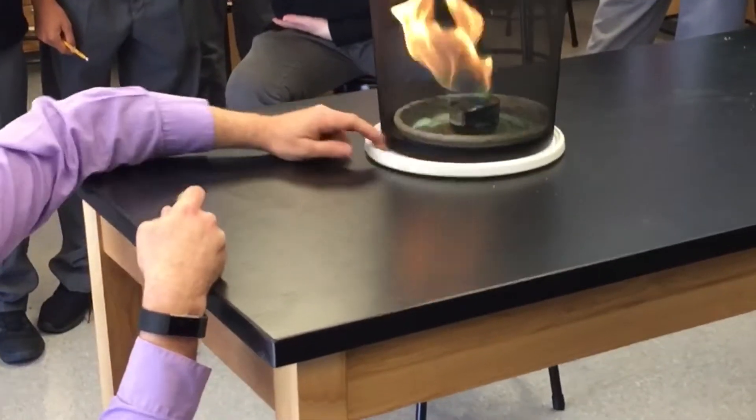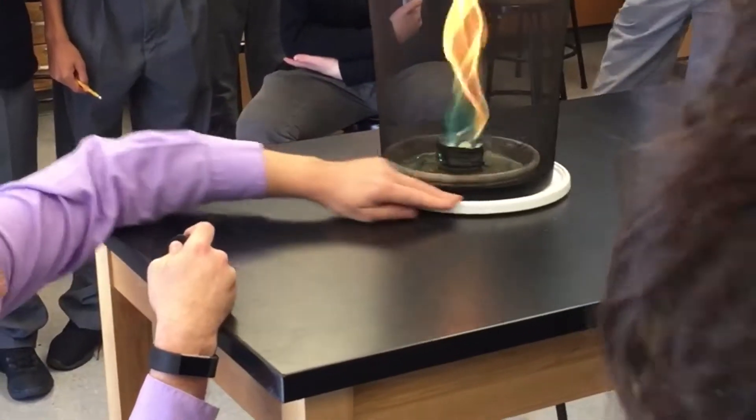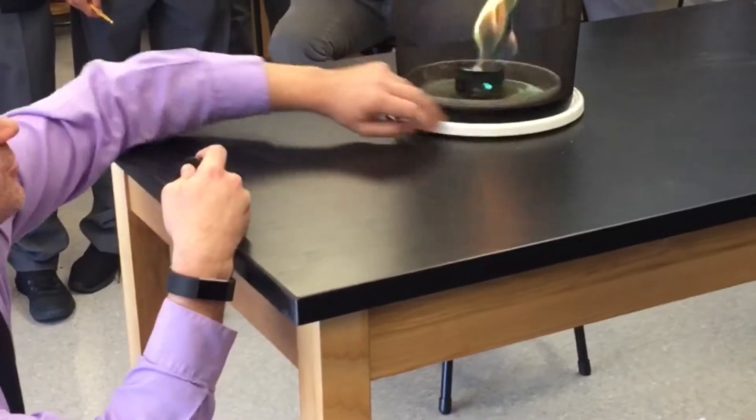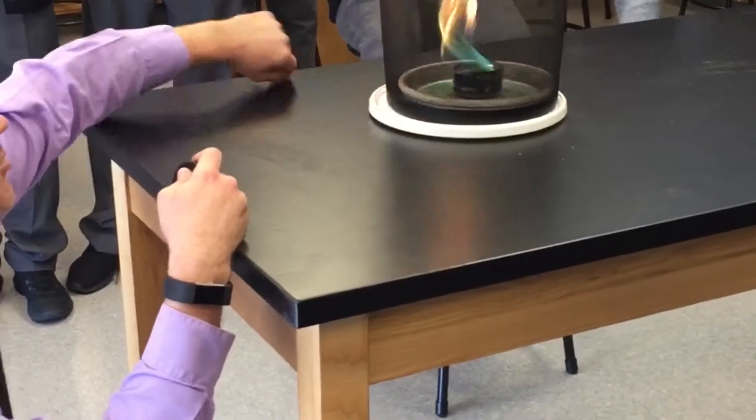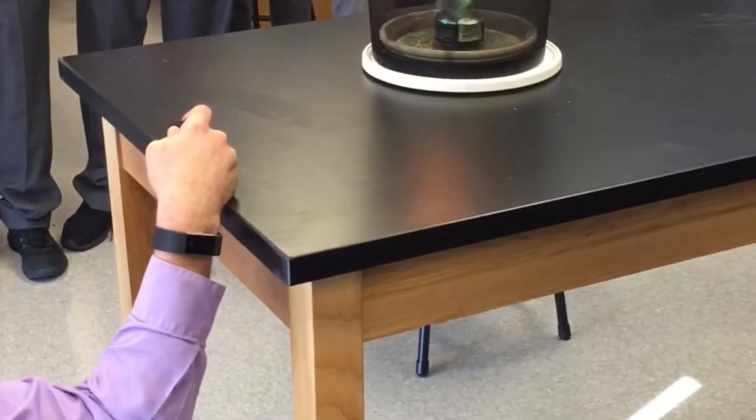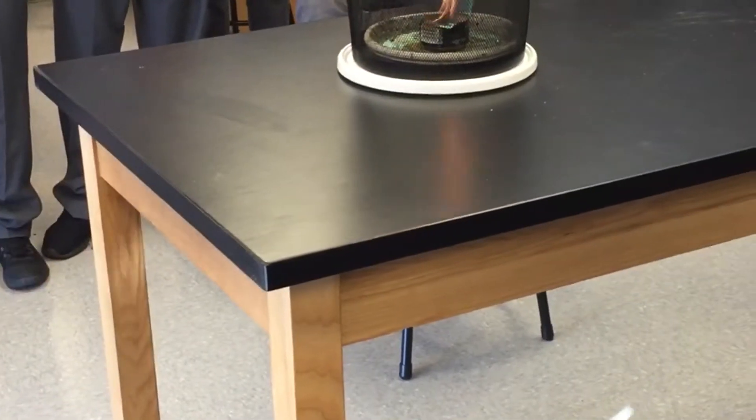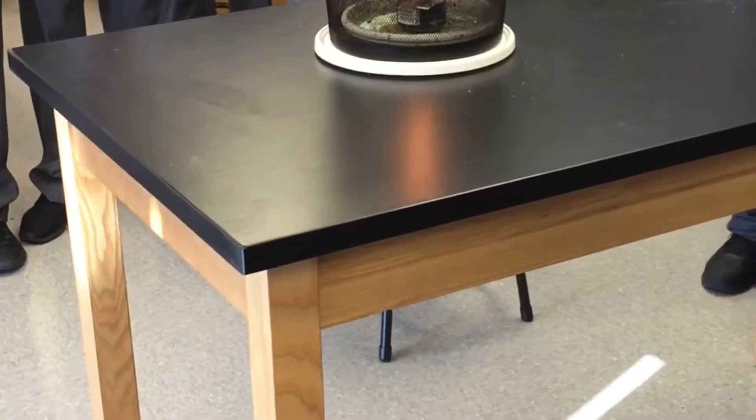So essentially what's happening is because the heat is drawing that air up, it's sucking in more air through the sides and causing that spiral pattern. That's so good. So it's not real big, but that's a fire tornado. A fire-nado.